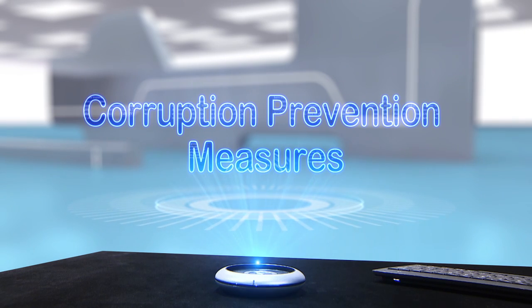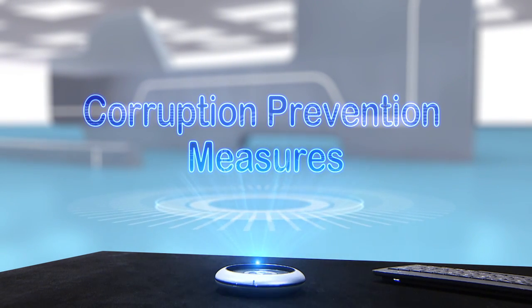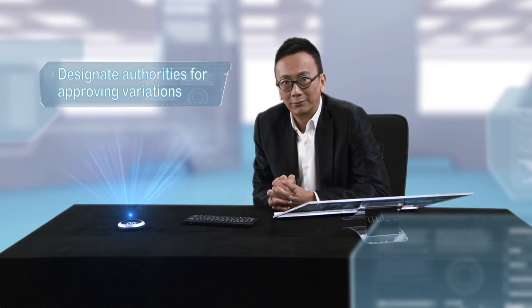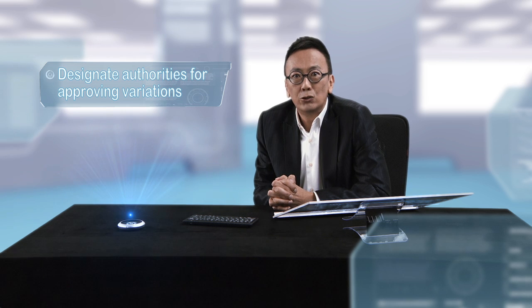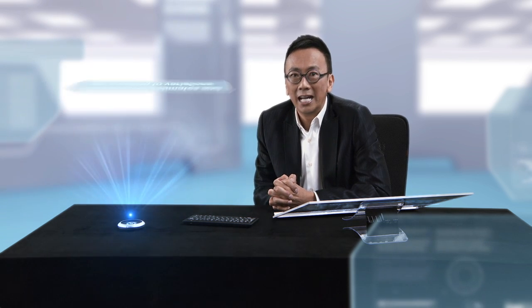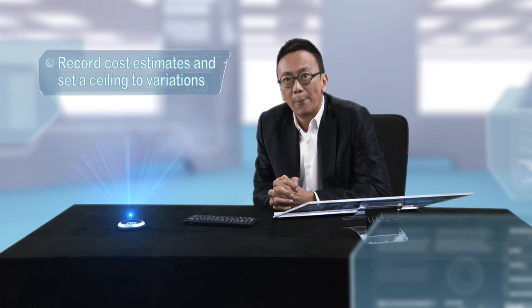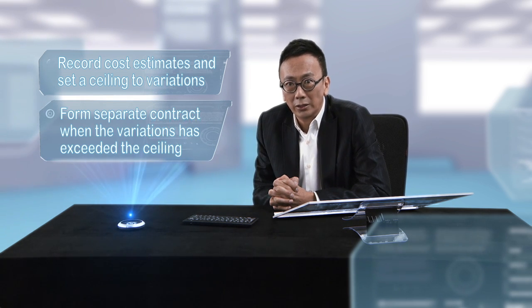The clip brings out two corruption risks. Contract variation is a corruption-prone area in contract administration. When a contractor wants to make up his profit margin after submitting a very low bid, he may compromise the project staff to obtain more payments through unnecessary or overvalued contract variations. This can include inflated costs and expenses or superfluous construction. To prevent abuse, the client should clearly designate the approving authorities for contract variations, require resident site staff to provide justifications and cost estimates, and set a ceiling on the value of contract variations — for example, 50% of the contract. Works exceeding the ceiling should be let under a completely separate tender.